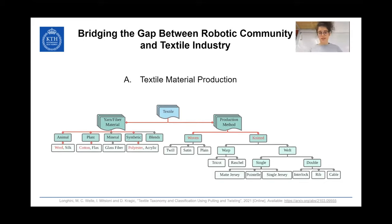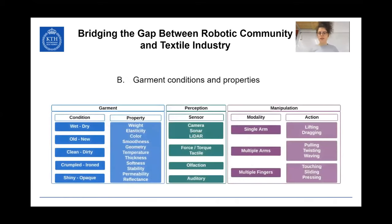This is still the perspective of the industry. What we wanted was to find a common viewpoint between the fashion industry and the robotic community. To do so we need to go beyond textile classification and understand which properties are most relevant to investigate — such as elasticity, smoothness, color, or the condition a garment could have. To do so we need to properly use the latest sensing technology and combine it with the appropriate manipulation actions to perceive these properties.